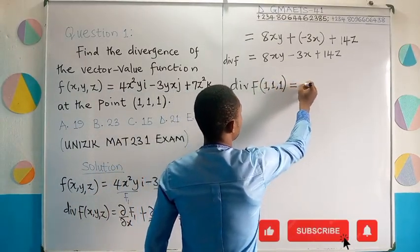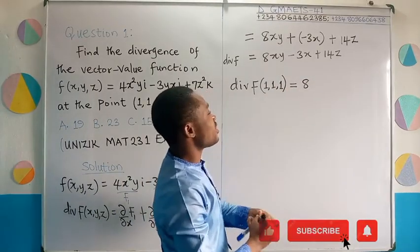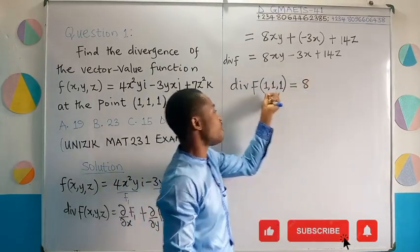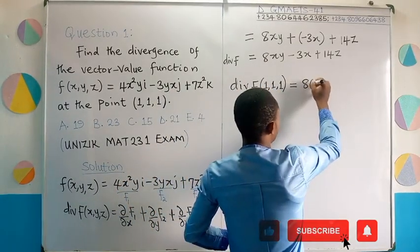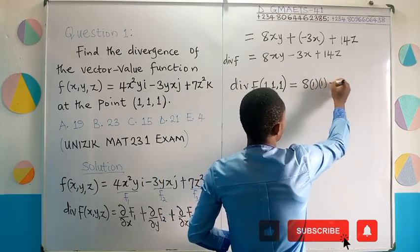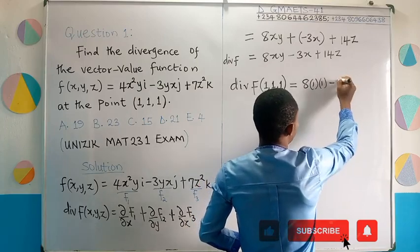This will be equal to 8. Wherever I see x, y, and z, I'll fix the value, the value of the points given, 1, 1, 1. So this is going to be 8 × 1 × 1 - 3 × 1 + 14 × 1.